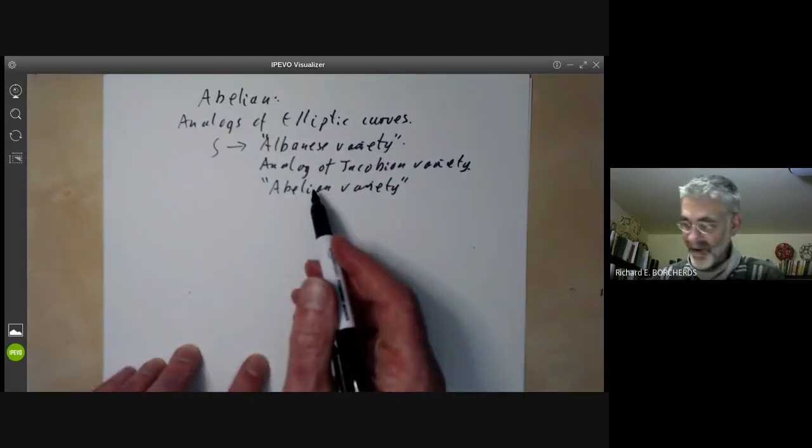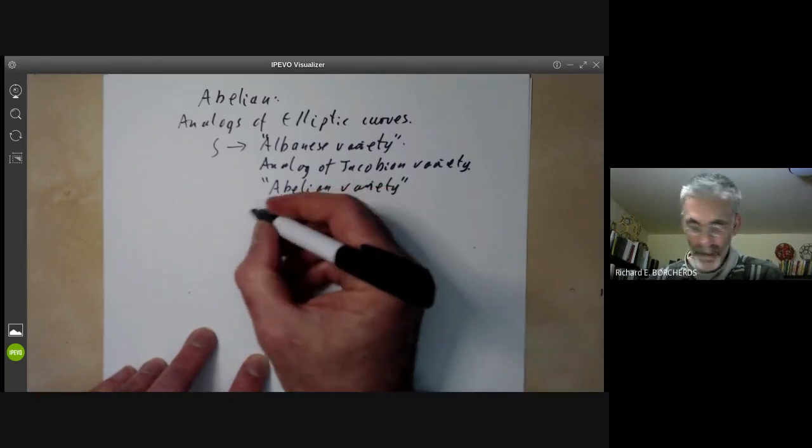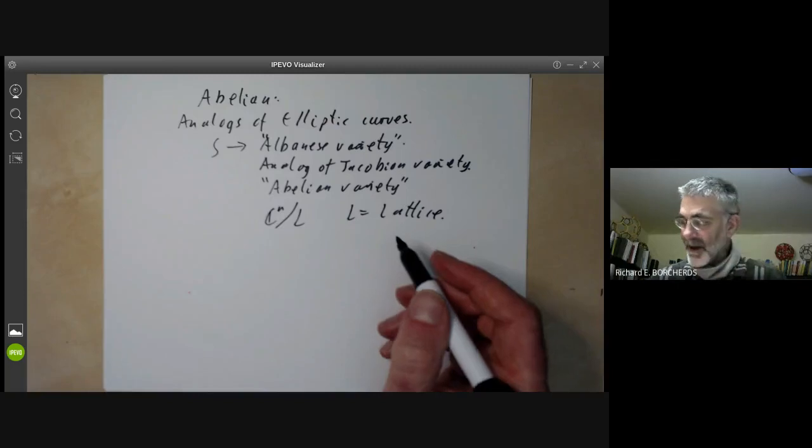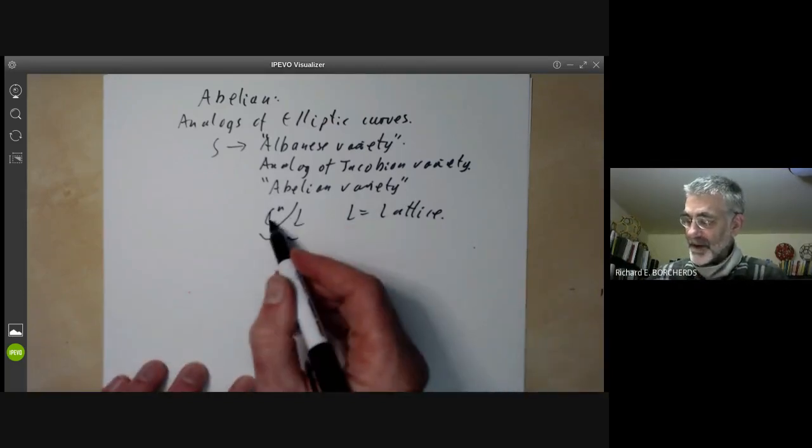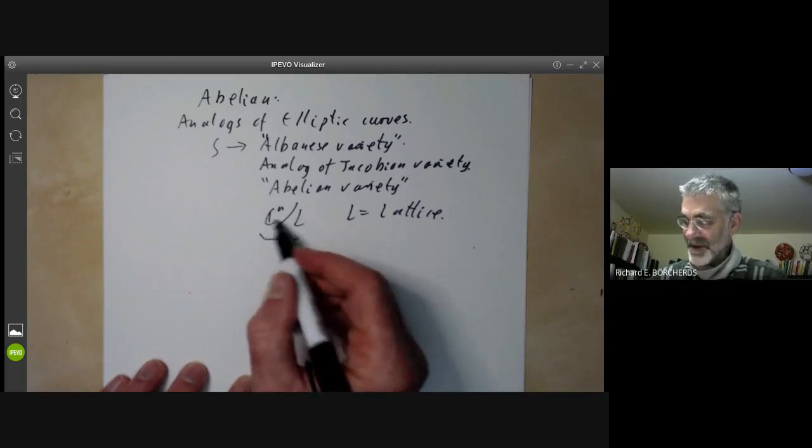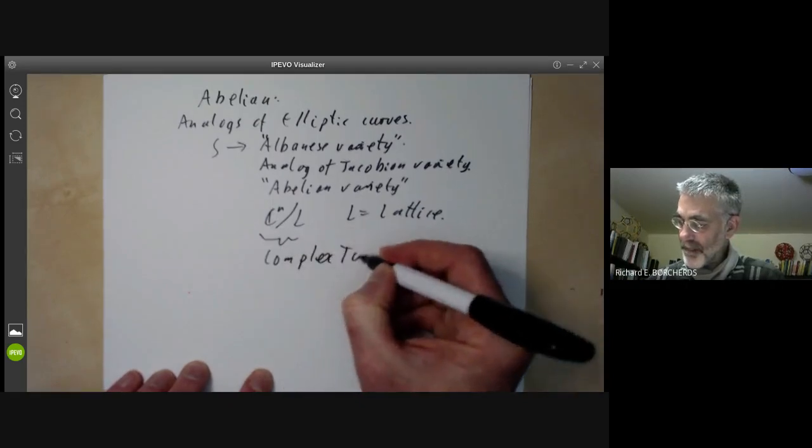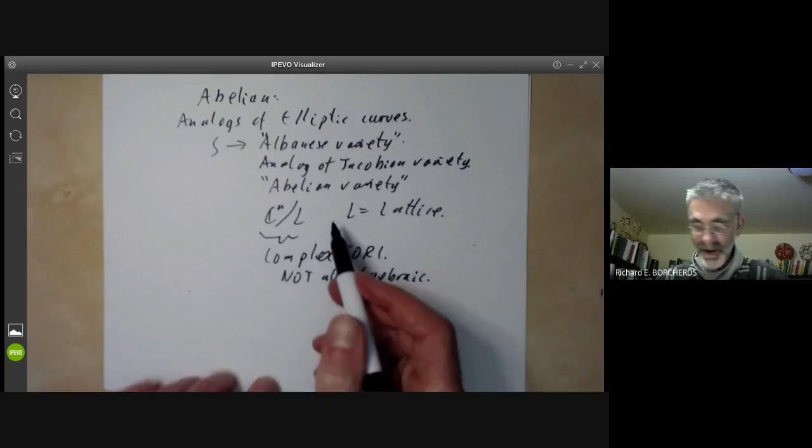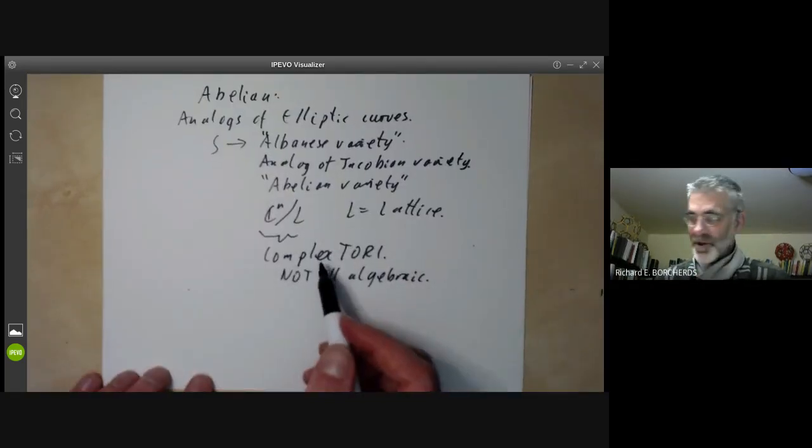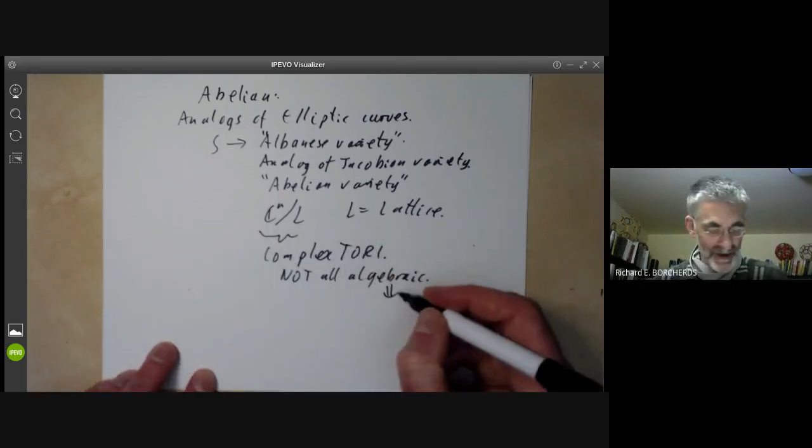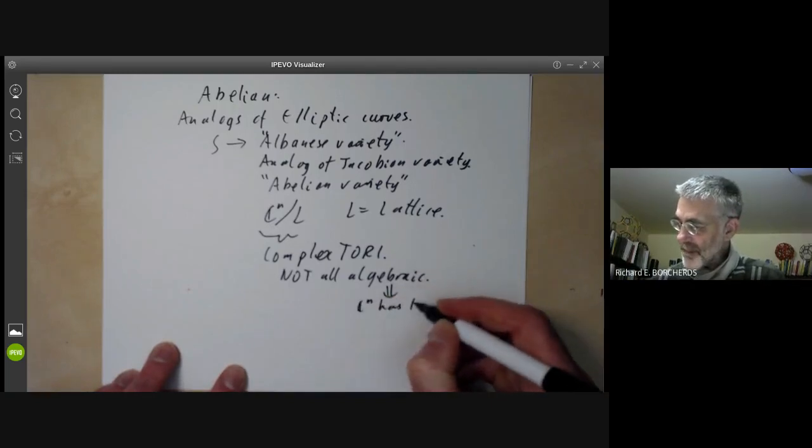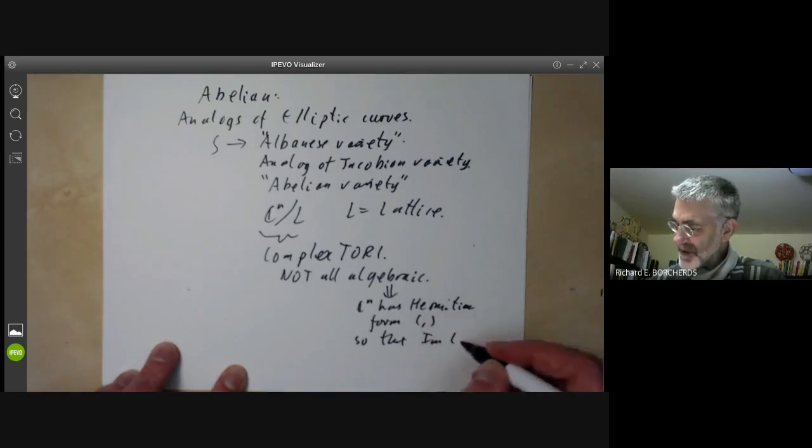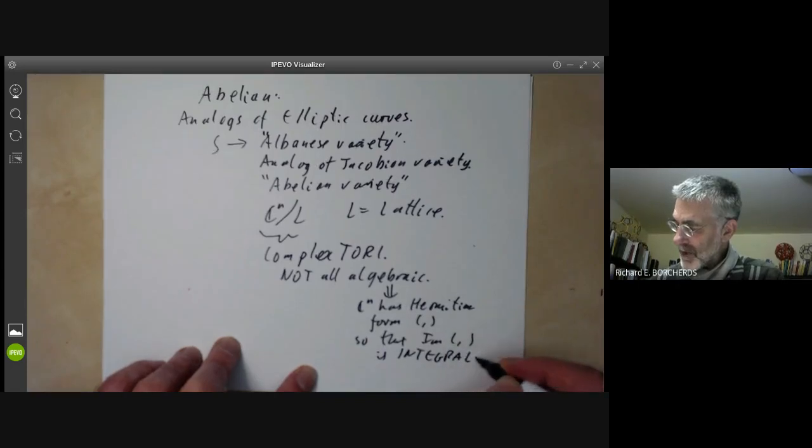It's something called an abelian variety. In the case of abelian surfaces, this map turns out to be an isomorphism. So abelian surfaces are abelian varieties. Abelian varieties are all of the form ℂⁿ modulo a lattice L. You've got to be a bit careful here because complex manifolds of the form ℂⁿ over a lattice are called complex tori. But the problem with complex tori is they're not all algebraic. The ones that are algebraic are called abelian varieties.